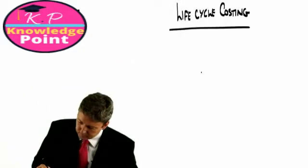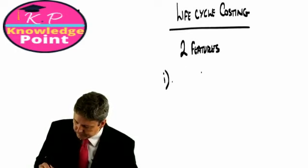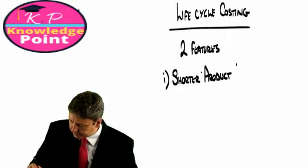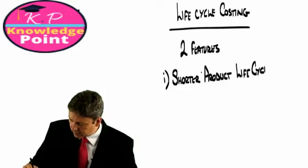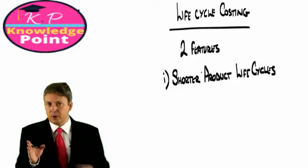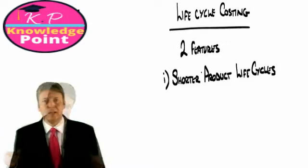Life cycle costing is attempting to reflect how things have changed in recent years. You see, if we look at the way manufacturing is going, there are two compelling features that affect the way that we as accountants can measure the costs of products. The two features: firstly, shorter product life cycles.